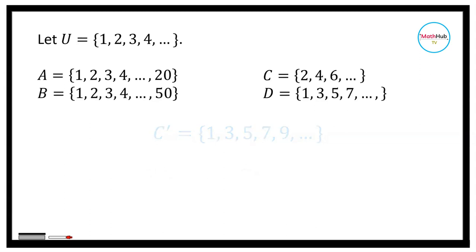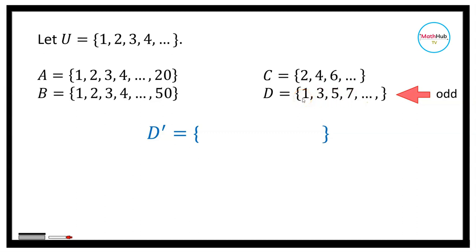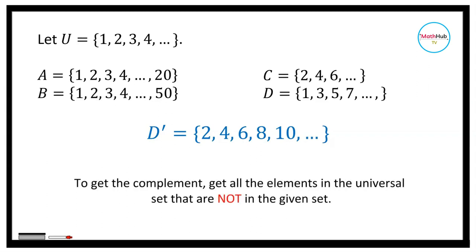Similarly, for the complement of D: D is a set of odd numbers, so D prime will be the set of all even numbers — 2, 4, 6, 8, 10, and so on. So again, when you say complement, you are looking for the elements that are not in that set but are in the universal set.